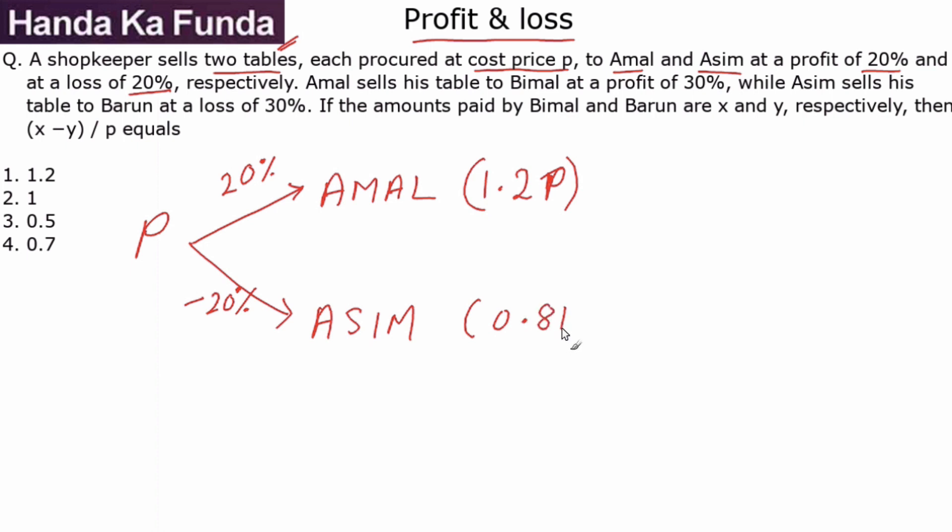Then Amal sells his table to Bimal at a 30% profit. So a profit of 30% on 1.2p. 30% of 1.2 is 0.36, so 1.2 plus 0.36 is 1.56p. This is the value at which Bimal buys it.